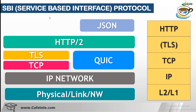This is the complete service-based interface protocol architecture. JSON is adopted as the serialization protocol. HTTP/2 is adopted as the application layer protocol for the service-based interface. TCP is currently adopted as the transport layer protocol, but in the future it may change to QUIC. The benefit of QUIC includes binary encoding like CBOR and other aspects that will be provided in future releases.